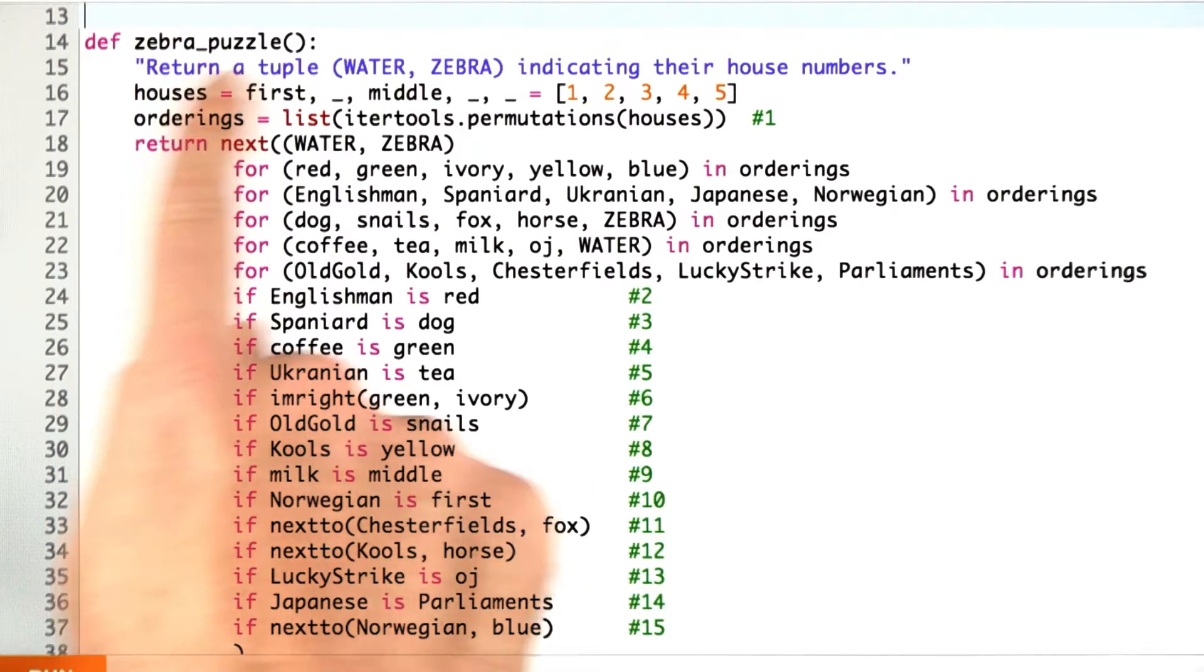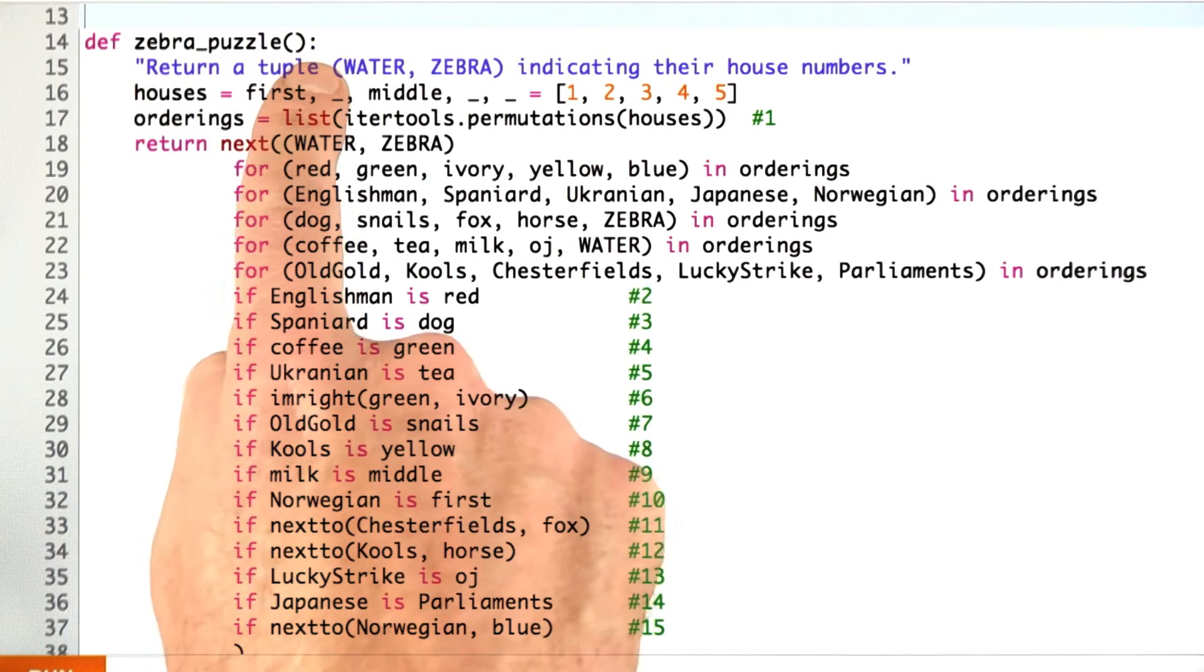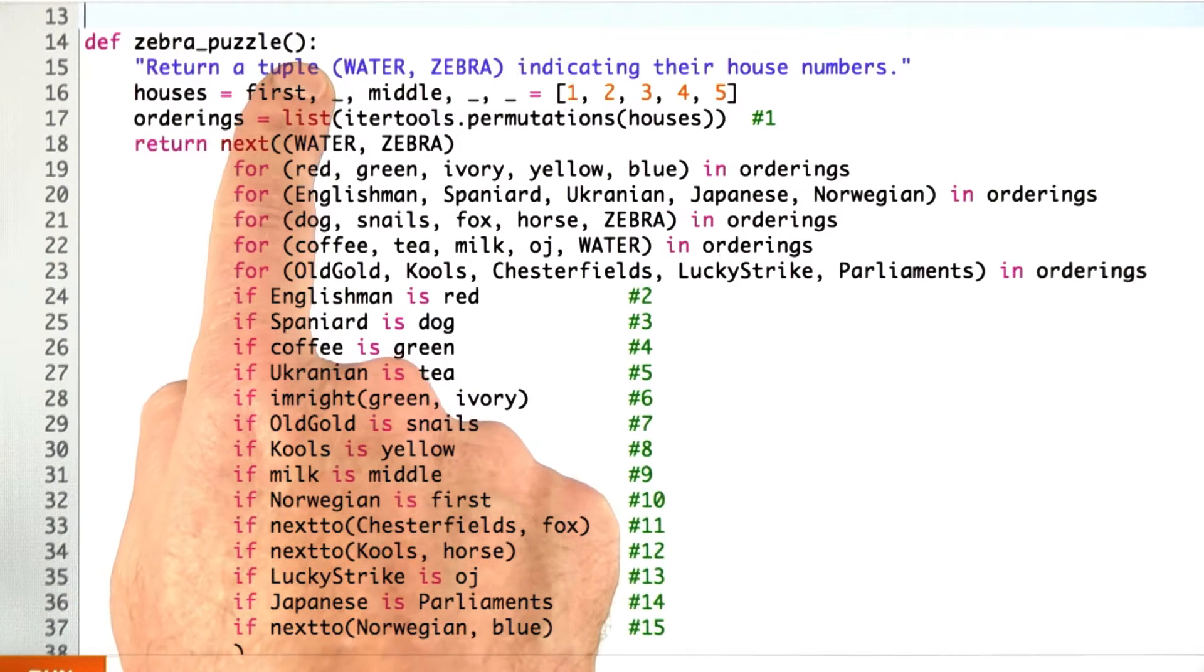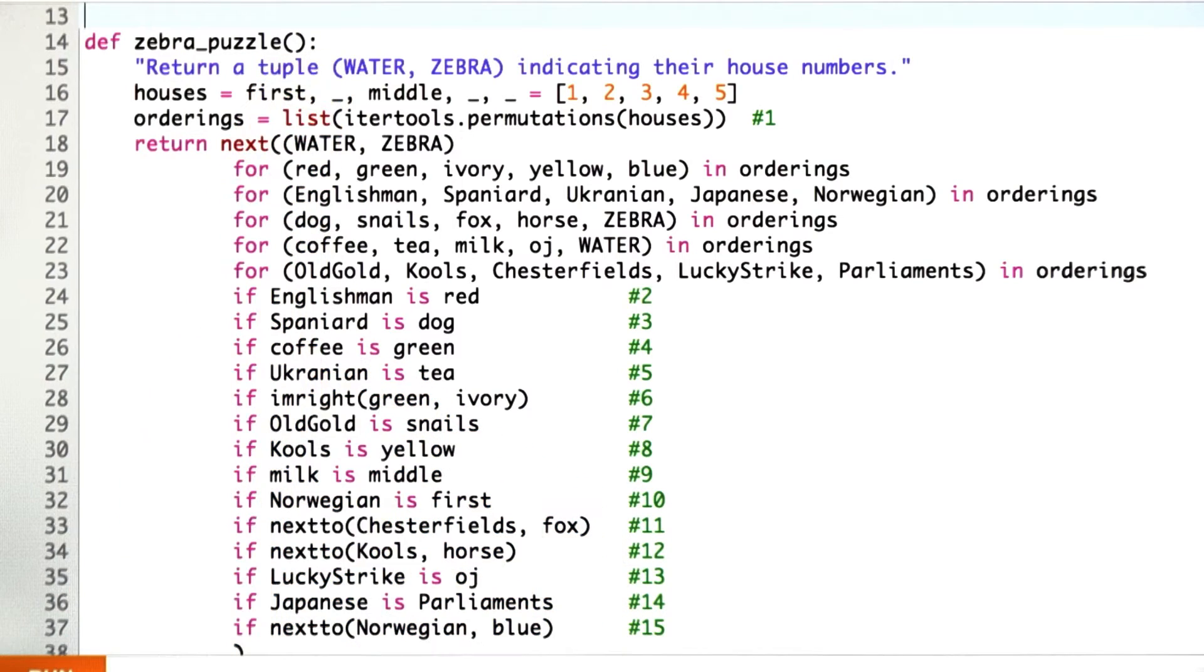Now let's put the whole thing together. I've defined zebra_puzzle. It's a function. It doesn't take any arguments because there's only one puzzle. There aren't different puzzles that require different arguments.